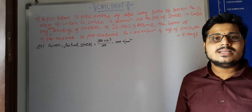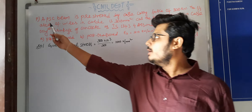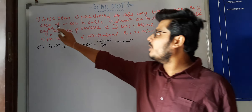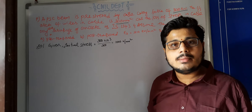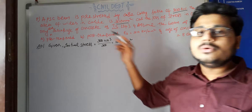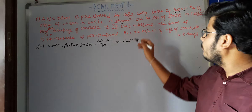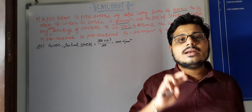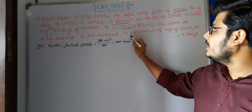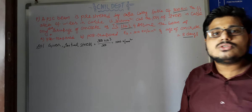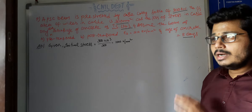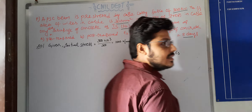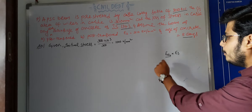Now we will take an example problem for loss due to shrinkage of concrete. A pre-stressed concrete beam is pre-stressed by a cable carrying a force of 300 kN. The cross-sectional area of the cable is 300 mm². Calculate the loss of stress only due to shrinkage as per IS 1343, assuming the beam as both pre-tension and post-tension. Assume ES = 210 kN/mm² and age of concrete t = 8 days.